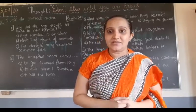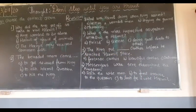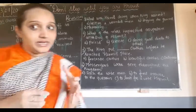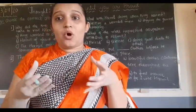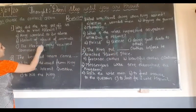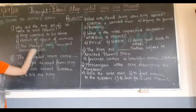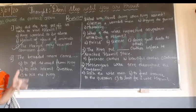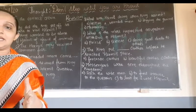Let's start with the revision. First one: why did the king get off his horse to visit the hermit? Because he wanted to go as a common person. The hermit only received common folk, that's why he decided to go as a common person.